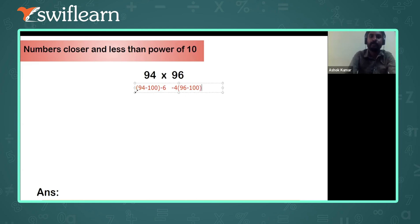So this will be the first step. In the step 2, what you have to do, it is very important. So in the step 2 you can see here, 94 minus 4 is how much? 90. Similarly 96 minus 6 is how much? 90.